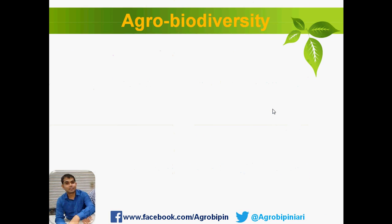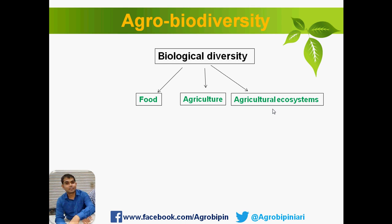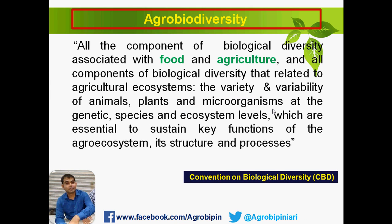Agrobiodiversity is the biological diversity related to food, agriculture, and agricultural ecosystems. This biological diversity can be in the form of animals, plants, and microorganisms. According to the Convention on Biological Diversity (CBD), it is all components of biological diversity associated with food and agriculture, and all components related to agricultural ecosystems — that is, the variety and variability of animals, plants, and microorganisms at the genetic, species, and ecosystem levels, which are essential to sustain key functions of the agro-ecosystem, its structure, and processes.